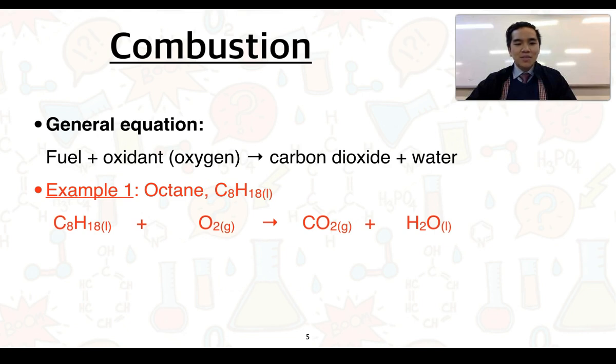As a reminder, to balance combustion reactions we firstly balance the carbons by adding the appropriate CO2s on the right. We can see there are 8 carbons on the left and 1 carbon on the right, so we need 8 CO2 molecules or 8 moles. We then balance the hydrogens by adding the necessary amounts of water. We've got 18 hydrogens on the left, 2 on the right, which means we need 9 waters.